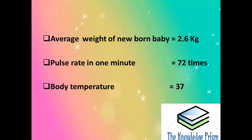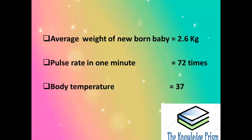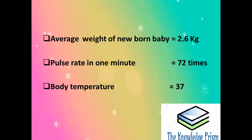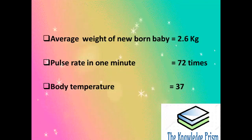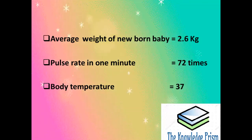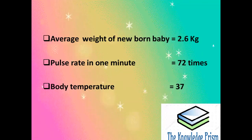Average weight of a newborn baby is 2.6 kg. Pulse rate in 1 minute is 72 times. Body temperature of human body is 37 degrees centigrade.